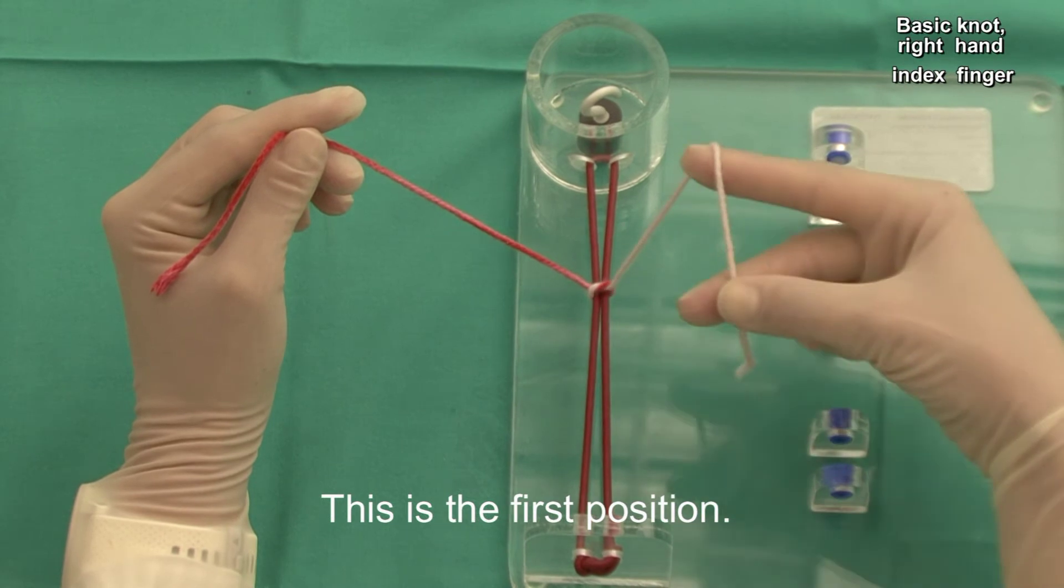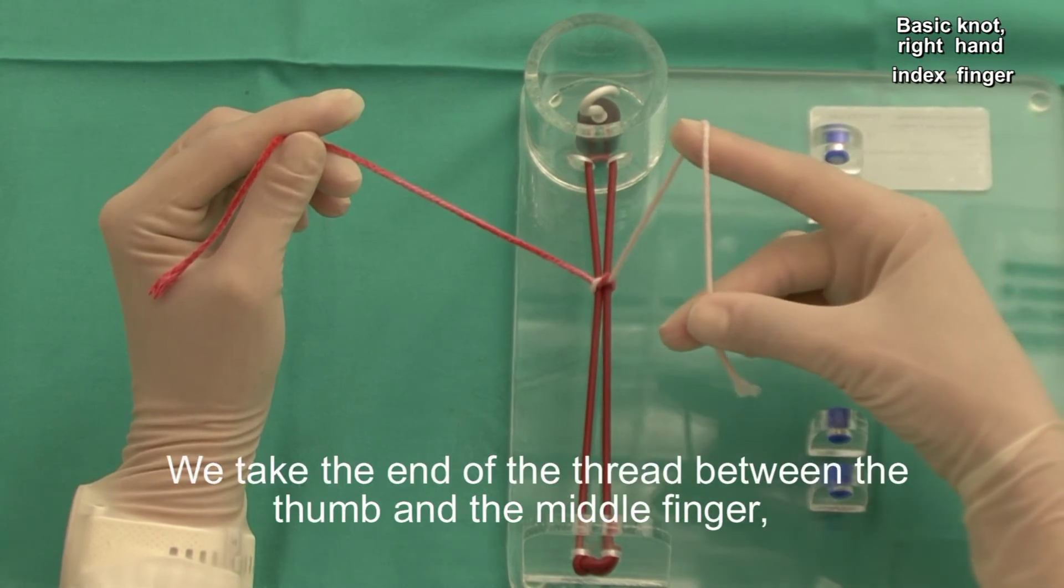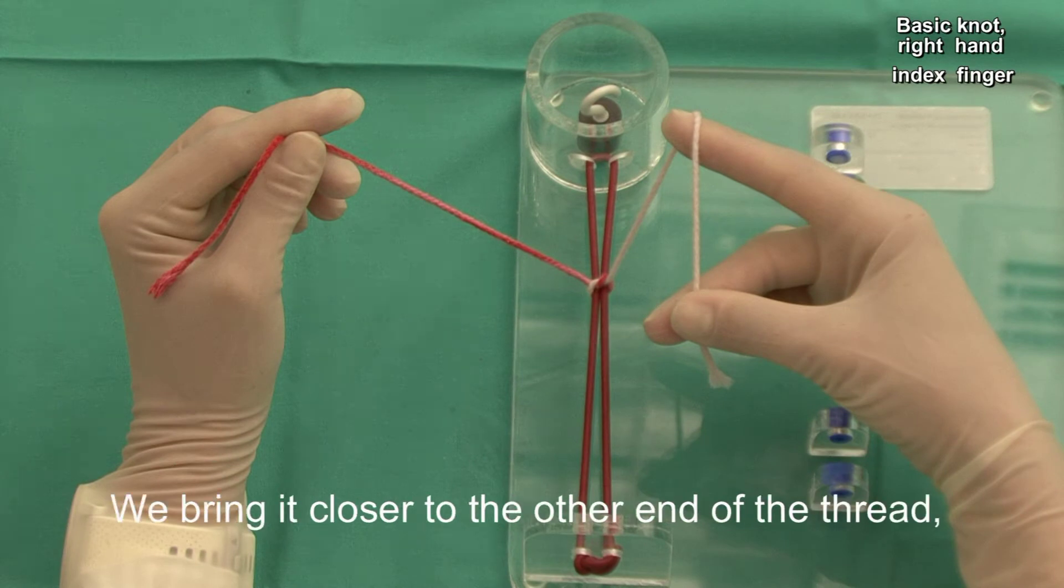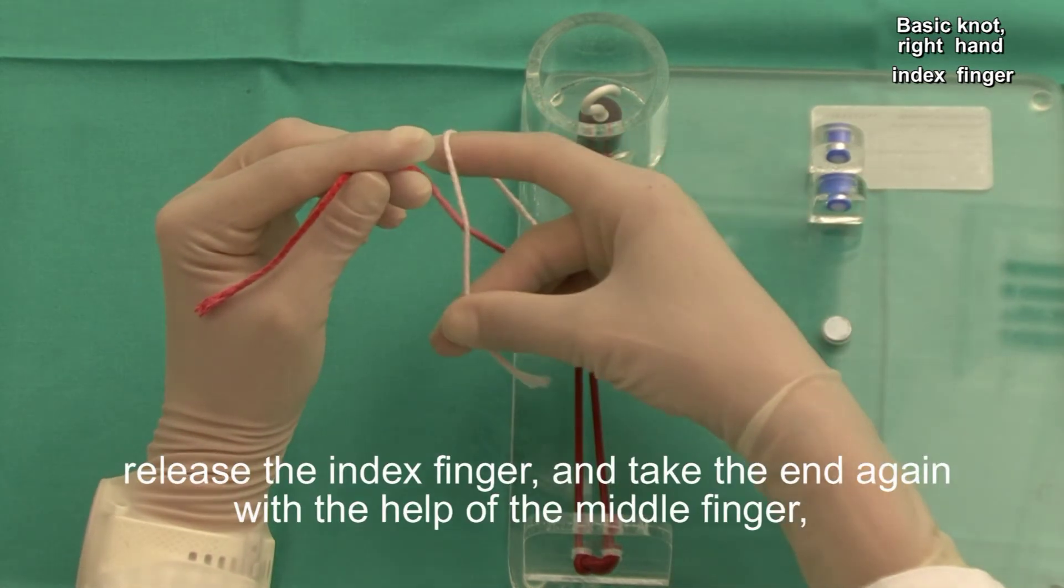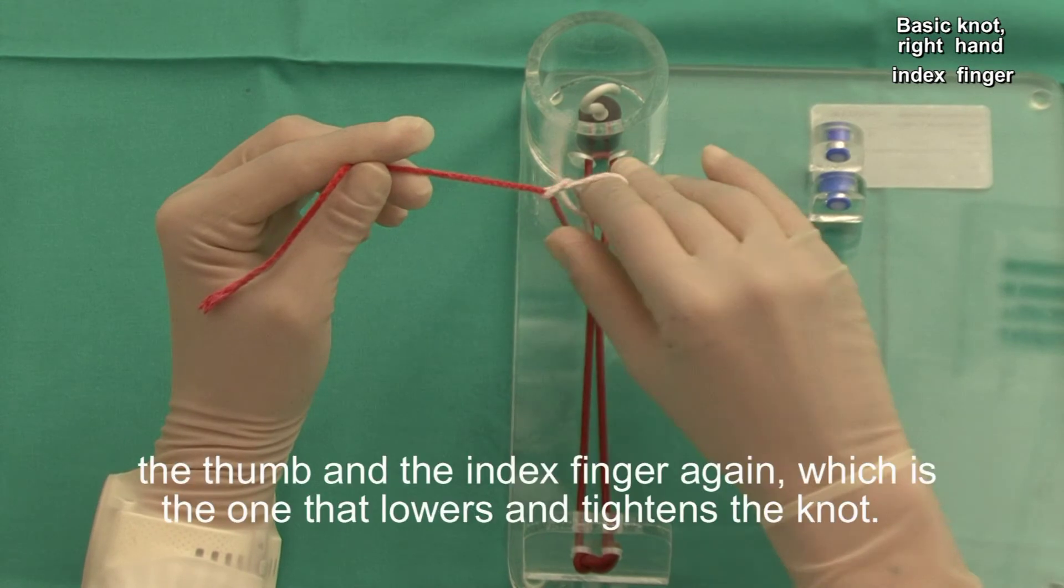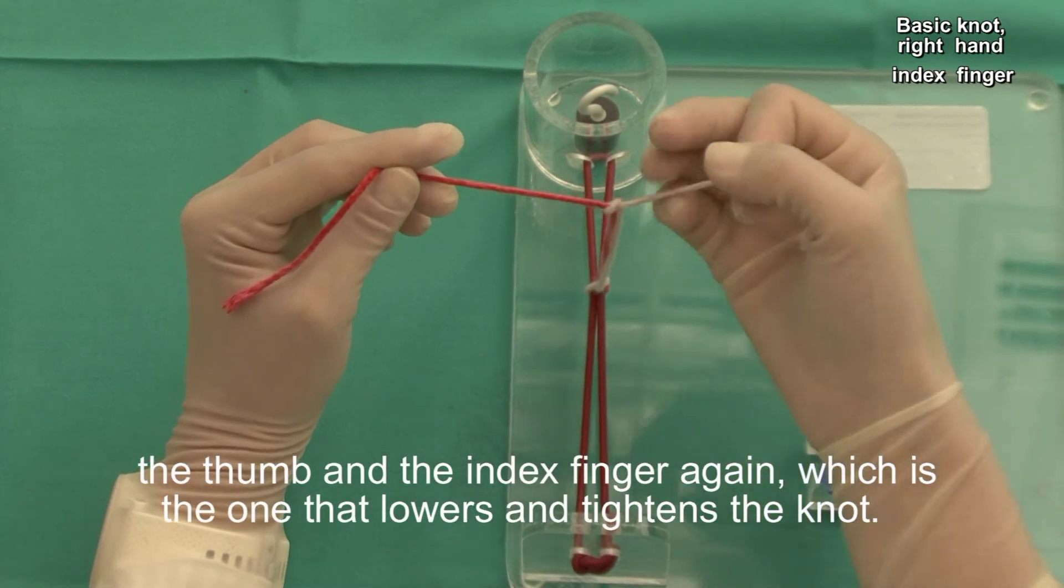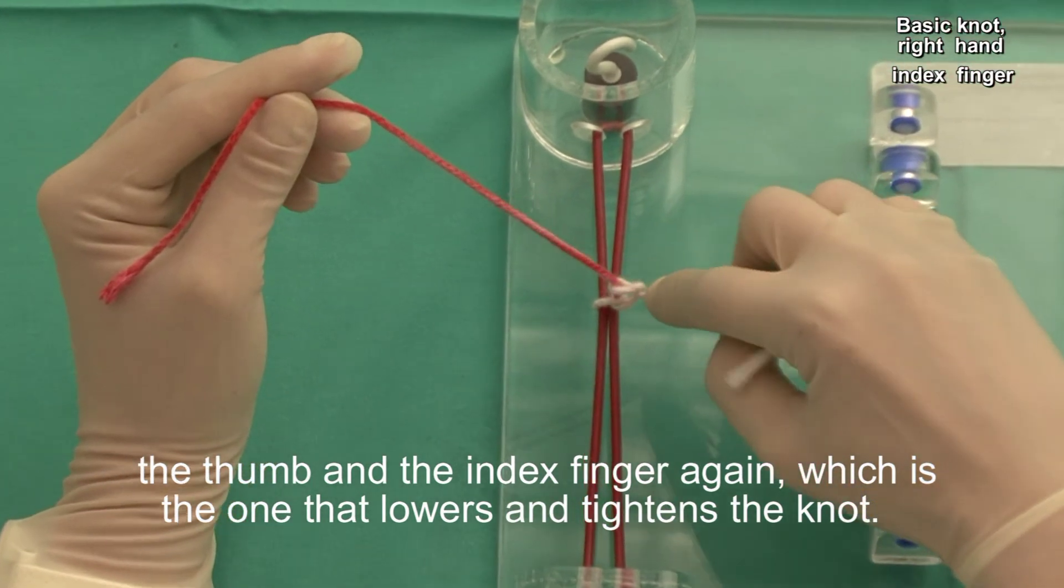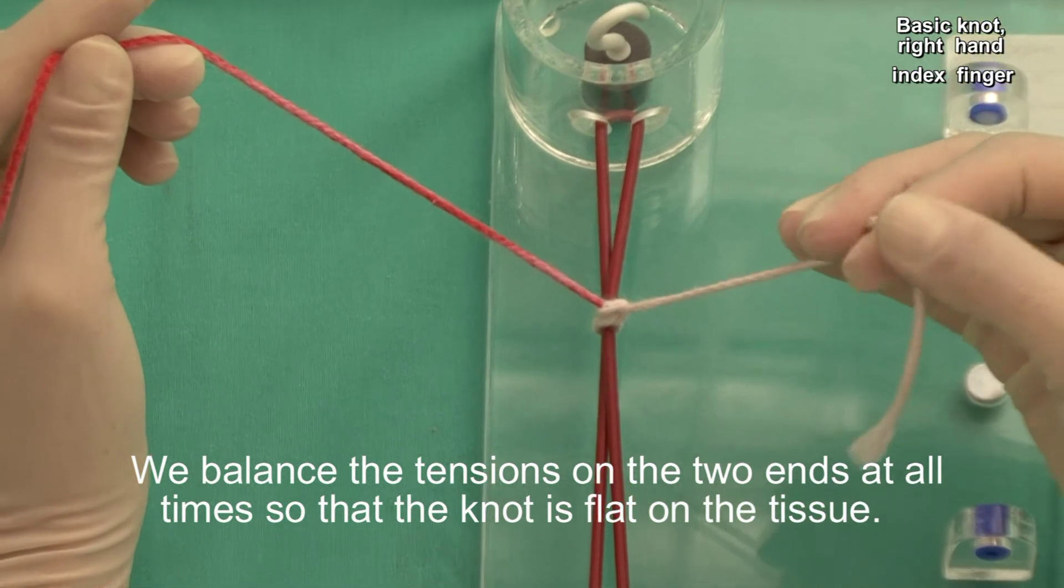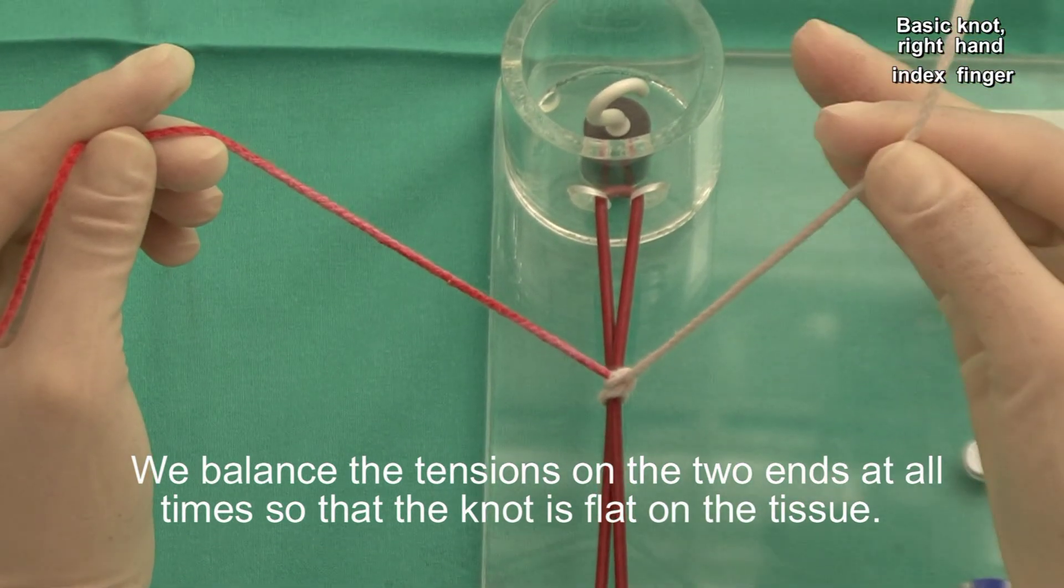This is the first position. We take the end of the thread between the thumb and the middle finger and we tighten with the index finger. We bring it closer to the other end of the thread. Release the index finger and take the end again with the help of the middle finger. The thumb and the index finger again. We lower and tighten the knot. We balance the tension on the two ends at all times so that the knot is flat on the tissue.